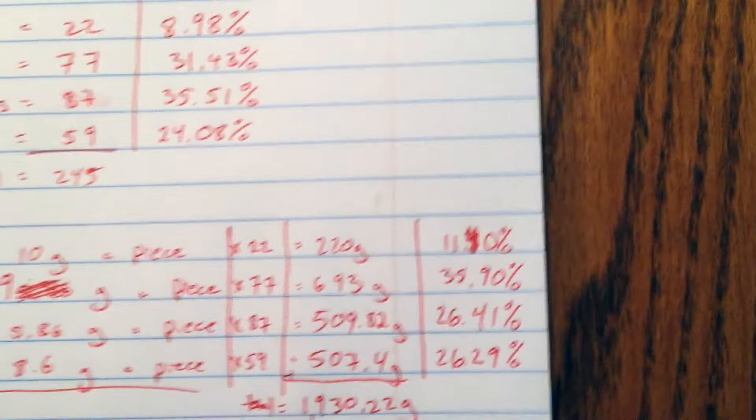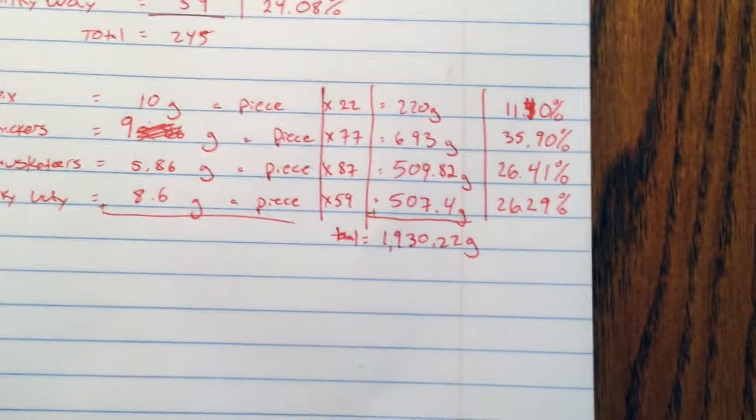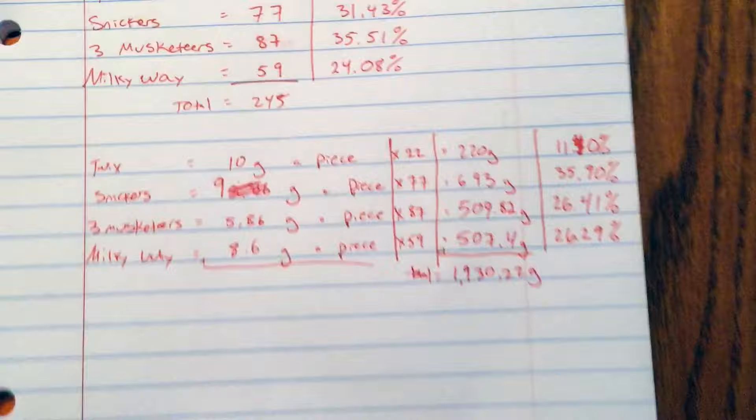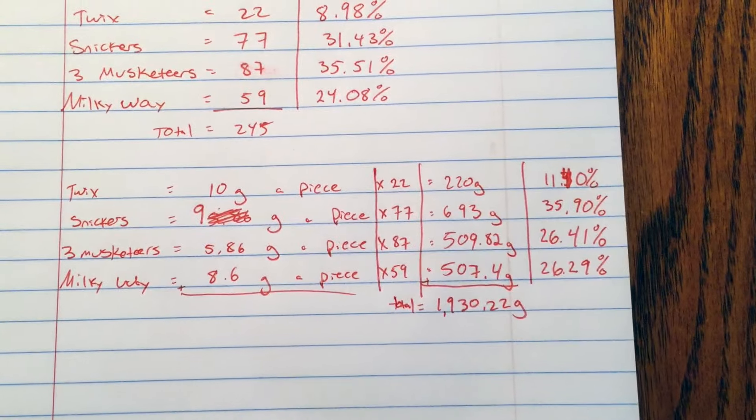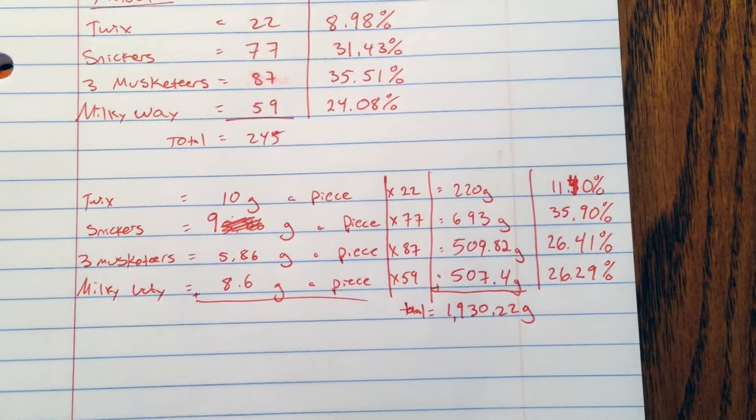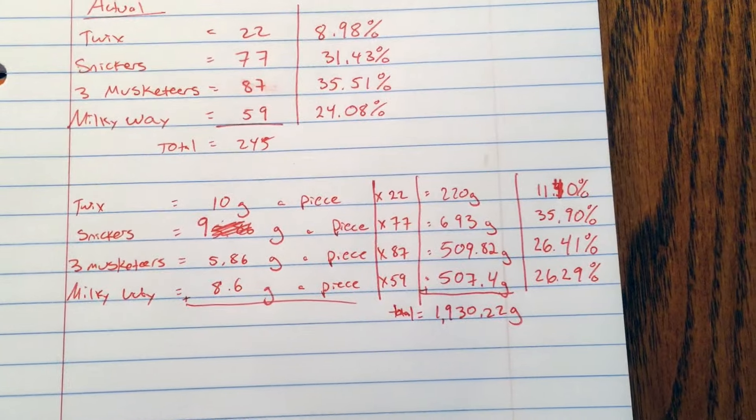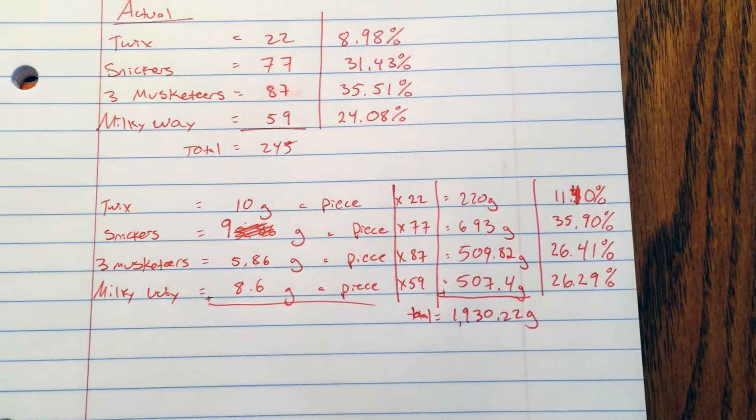So we break down into the percents of the total weight of the grams that are in the bag. Out of the total grams, only 11.4% were the Twix, 35.9% were the Snickers.